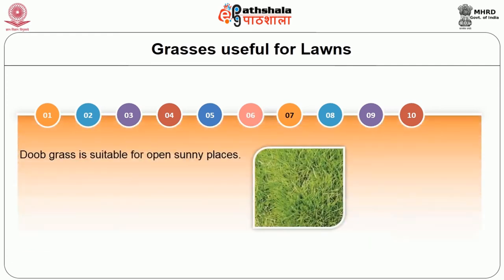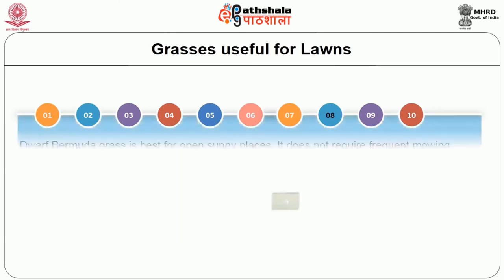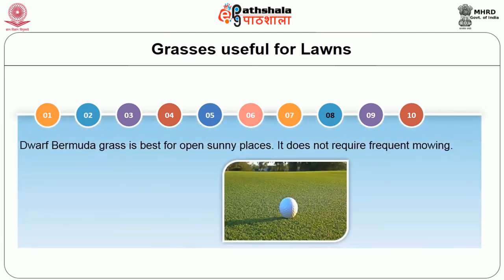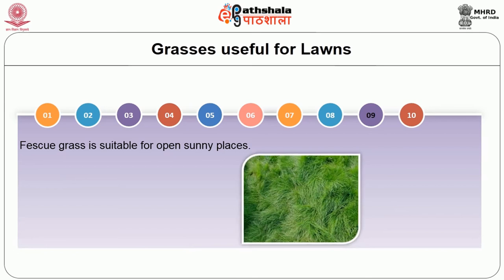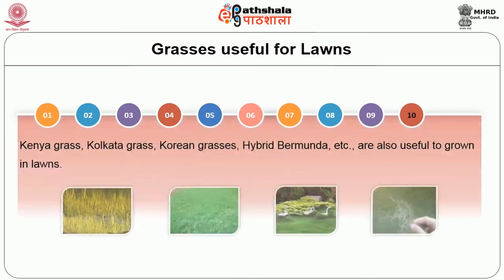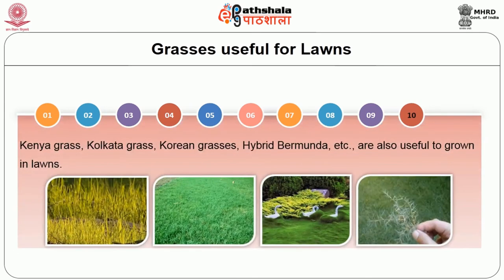Dube grass is suitable for open sunny places. Dwarf Bermuda grass is also useful for open sunny places and does not require frequent mowing. Festuca grass is suitable for open sunny places. Kenya grass, Kikuyu grass, Korean grass, and Hybrid Bermuda etc. are also useful to grow in lawns.